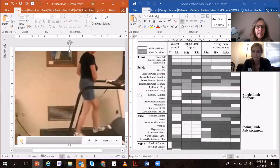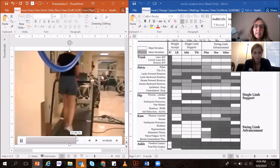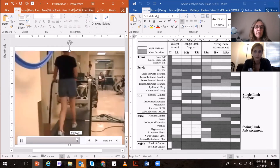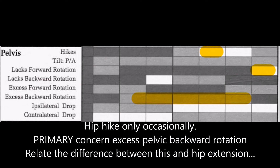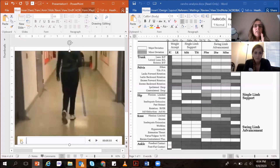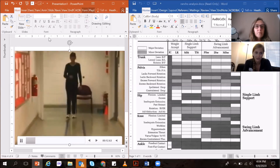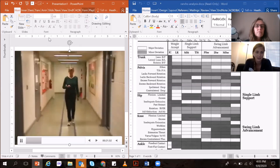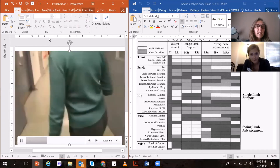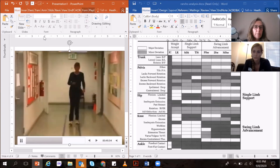Now we're up to the pelvis. Sometimes she hikes her hip and sometimes she tilts the pelvis — it's not consistent, which is interesting. There's excessive rotation in the anterior-posterior plane, with occasional hip hike and occasional posterior retraction. Moving to the trunk: the trunk doesn't move a lot. It moves more when she's on the treadmill. She definitely has a forward lean as she's turning. Even with that arm flexion synergy, it's not a strong trunk, but I don't see huge deviations.